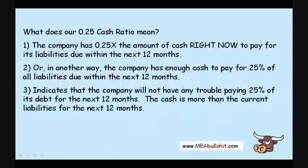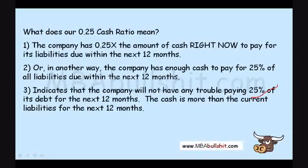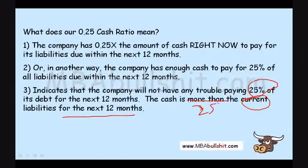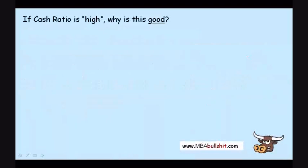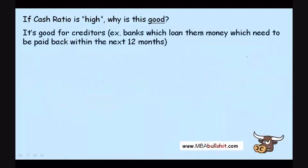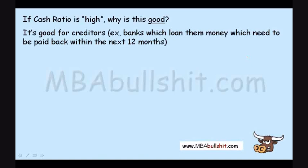It indicates that the company will not have any trouble paying 25% of its debt for the next 12 months — it's just enough to pay for 25% of current liabilities. If the cash ratio is high, why is this good? It's good for creditors such as banks which loan money to the company and need to be paid back within the next 12 months. This indicates that they can easily get paid back.